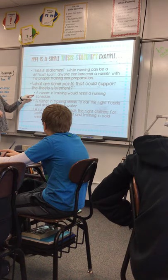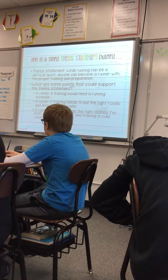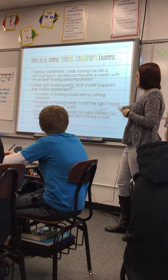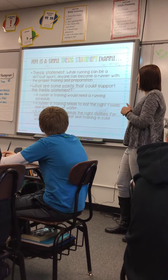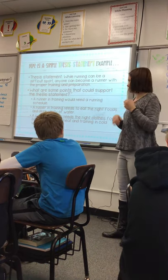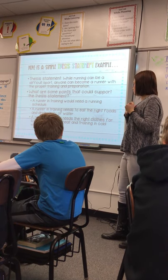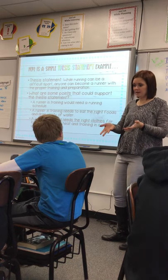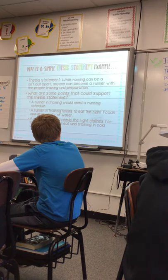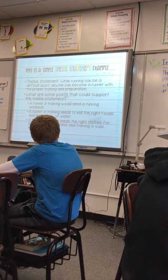Let's read the three topic sentences. First: 'A runner in training would need a running schedule' — so the first paragraph is about a running schedule. Second: 'A runner in training needs to eat the right foods and drink plenty of water' — nutrition, diet, health. Third: 'A runner in training needs the right clothes for both training in heat and training in cold weather' — correct clothing. We can already tell they're guiding us through those sections using that thesis statement and those topic sentences.